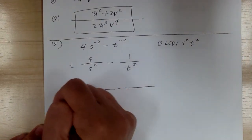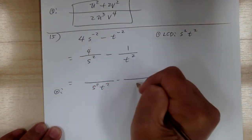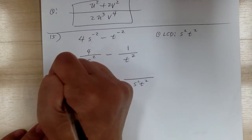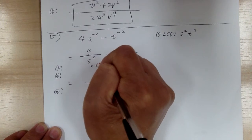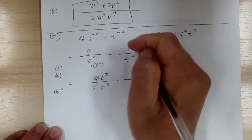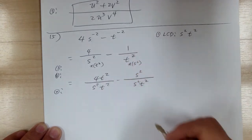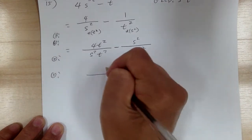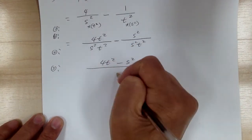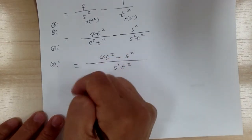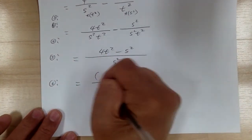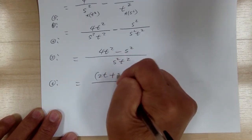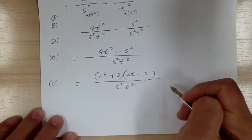Now go through the steps. Step one: LCD. Number and alphabetical — you need s squared and t squared. Step two: get your s squared t squared template ready. Step three and four: from s squared to s squared t squared, multiply by t squared — giving 4t squared on top. From t squared, multiply by s squared — giving s squared on top. Step five: put them together — 4t squared minus s squared over s squared t squared. This is factorable — it's a difference of squares. Step six: factor to get 2t plus s, times 2t minus s, over s squared t squared.